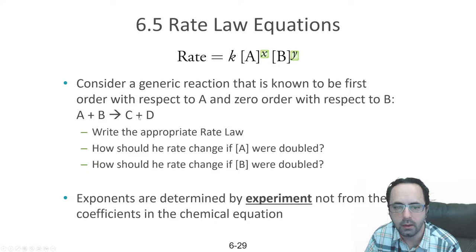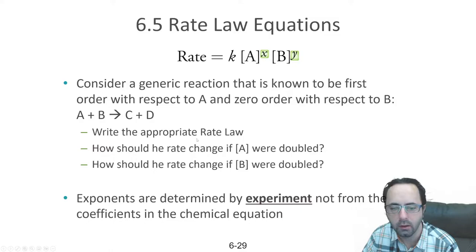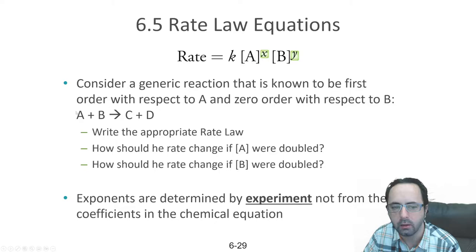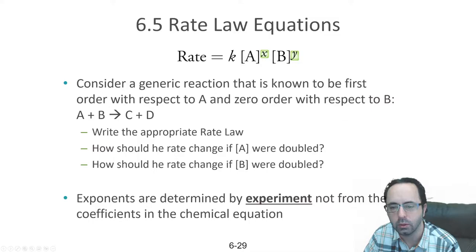If we consider reactants A and B producing products C and D, the rate law is written in terms of reactants only — C and D are not written, as those would correspond to the reverse reaction. Notice we haven't put any orders in for X and Y, because the orders are not necessarily directly related to the coefficients in the balanced equation. These X and Y can only be determined by experiment, because they depend on the exact mechanism of the reaction — which bonds are breaking and which bonds are being formed, and in what order.